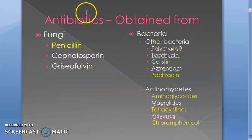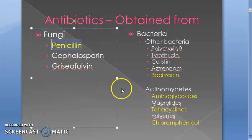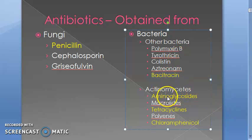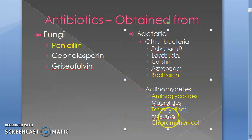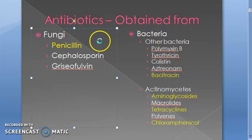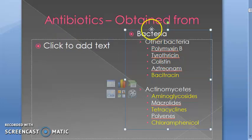How can you obtain antibiotics? Antibiotics come mainly from fungi — penicillin especially comes from fungi. From bacteria you have bacitracin, aminoglycosides like streptomycin and gentamicin, tetracyclines like doxycycline, and chloramphenicol — wherever tetracycline is listed, you can generally also write chloramphenicol. These come from bacteria.